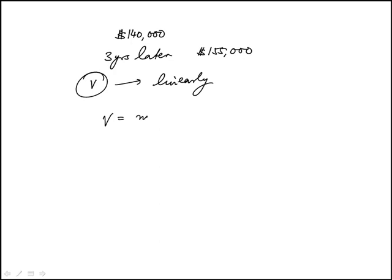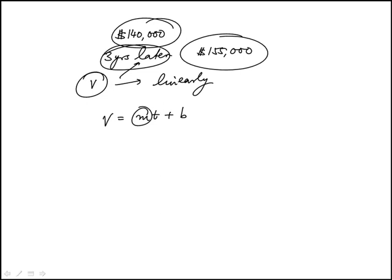So we can use the linear model V = mt + b, and we can find the slope from the fact that after three years change in time, the price goes from $140,000 to $155,000.